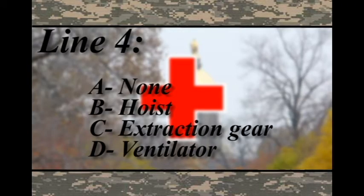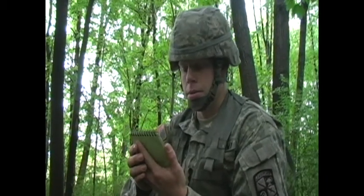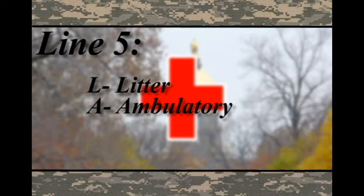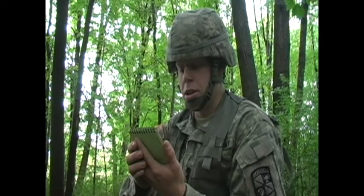Line 4 is special equipment required. Alpha — None. Bravo — Hoist, required for raising casualties where there is no sufficient location for a helicopter to land. Charlie — Extraction equipment such as the jaws of life. Delta — Ventilator. Example: Lima 4, None. Line 5 is the number of patients by type. Lima — Litter: those who will need a litter to be moved. Alpha — Ambulatory: those who can move under their own power. Example: Lima 5, One Lima, One Alpha.